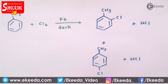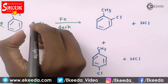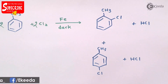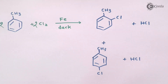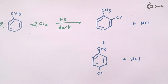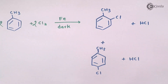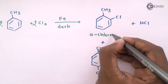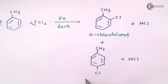A mixture of products is obtained. These can be separated very easily because the physical constants of the two products differ significantly. One product is orthochlorotoluene and the other is parachlorotoluene.